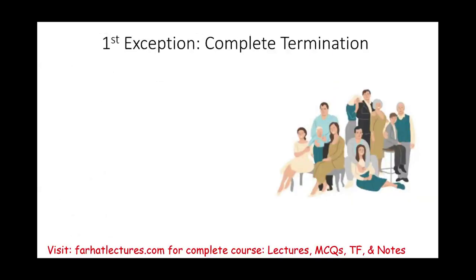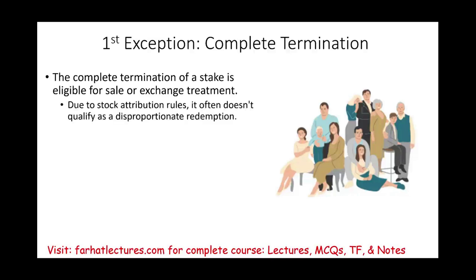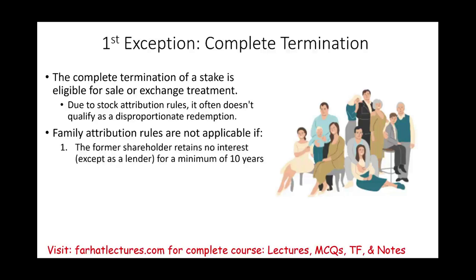Exception one: complete termination is eligible for sale or exchange treatment. But remember, due to stock attribution, a family member's ownership often prevents qualification. However, there is an exception: family attribution rules are not applicable if the former shareholder retains no interest except as a lender for a minimum of 10 years. So you must be fully out for 10 years and cannot buy back any stock. A creditor relationship — lending money — is acceptable, but you cannot be an owner.